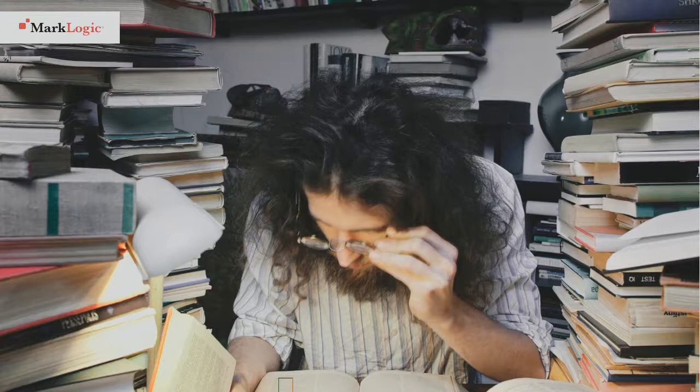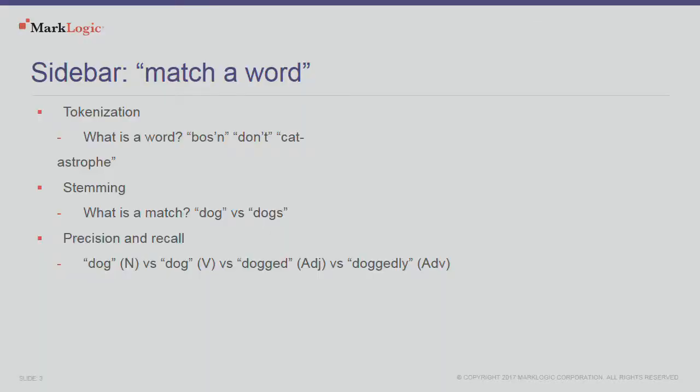Let's double-click on what happened there. First thing is we have to find words. English speakers think this is easy: look for white space, look for punctuation, everything in between is a word. There are some interesting edge cases involving apostrophes and hyphens, but it's not a bad algorithm for English — it's more or less the algorithm MarkLogic uses. But for another language like Chinese, where there's no white space between words, it's a terrible algorithm. This process is called tokenization, and it varies from language to language.